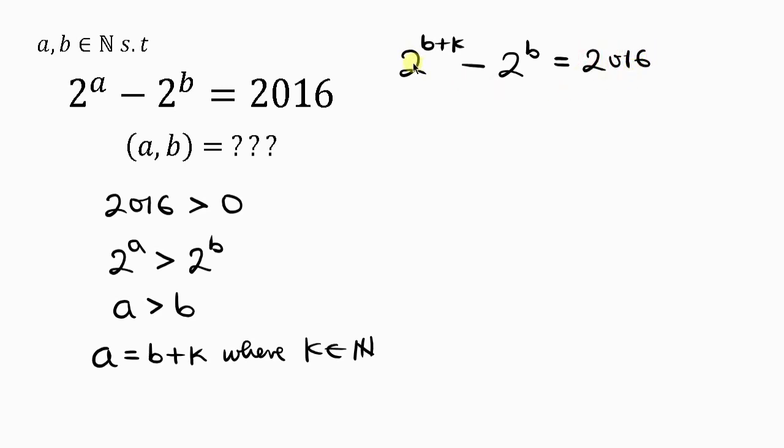We're going to be applying the law of indices, the multiplication law which says when I have x^m times x^n, this equals x^(m+n). So this expression becomes 2^b times 2^k minus 2^b equals 2016.